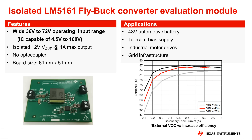The isolated LM5161 fly-buck EVM is configured to handle a 36 to 72 volt input voltage range and has an isolated 12 volt output that can handle 1 amp max output current. You can see on the board that there is no optocoupler circuit, and also that the transformer is extremely small. The board size is roughly 61 mm by 51 mm. To the right, you can see the efficiency curve of this board at various loads and various input voltages. Note that if you supply a VCC externally to the device, this efficiency will increase.